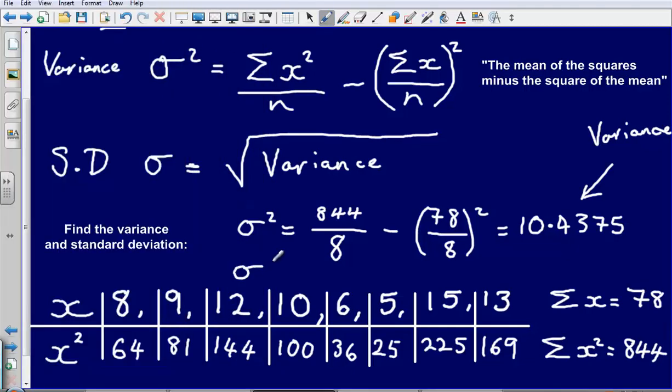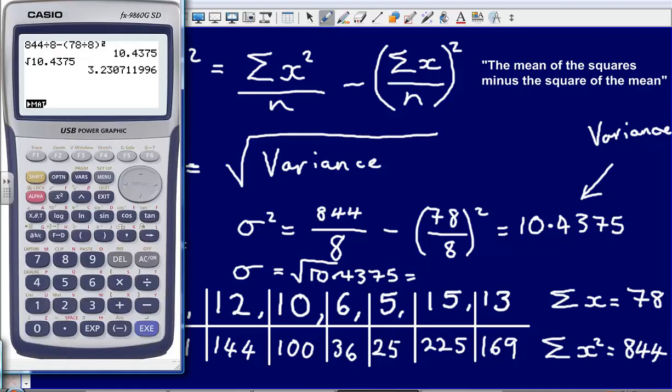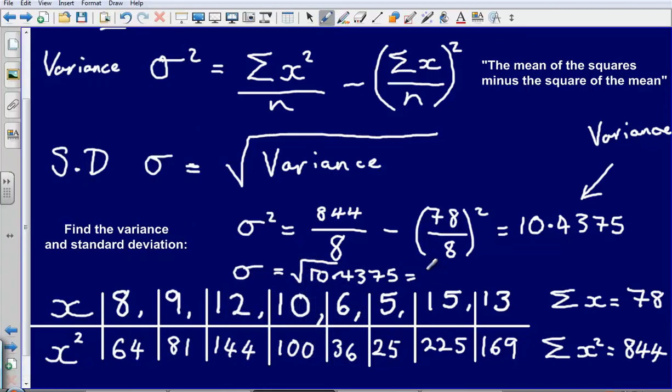My value for sigma is just going to be the square root of 10.4375. And that gave us, let's just have a look again, 3. And I'm just going to call it 3.23 for just ease of writing it down. So our standard deviation, 3.23. Our variance, 10.375.